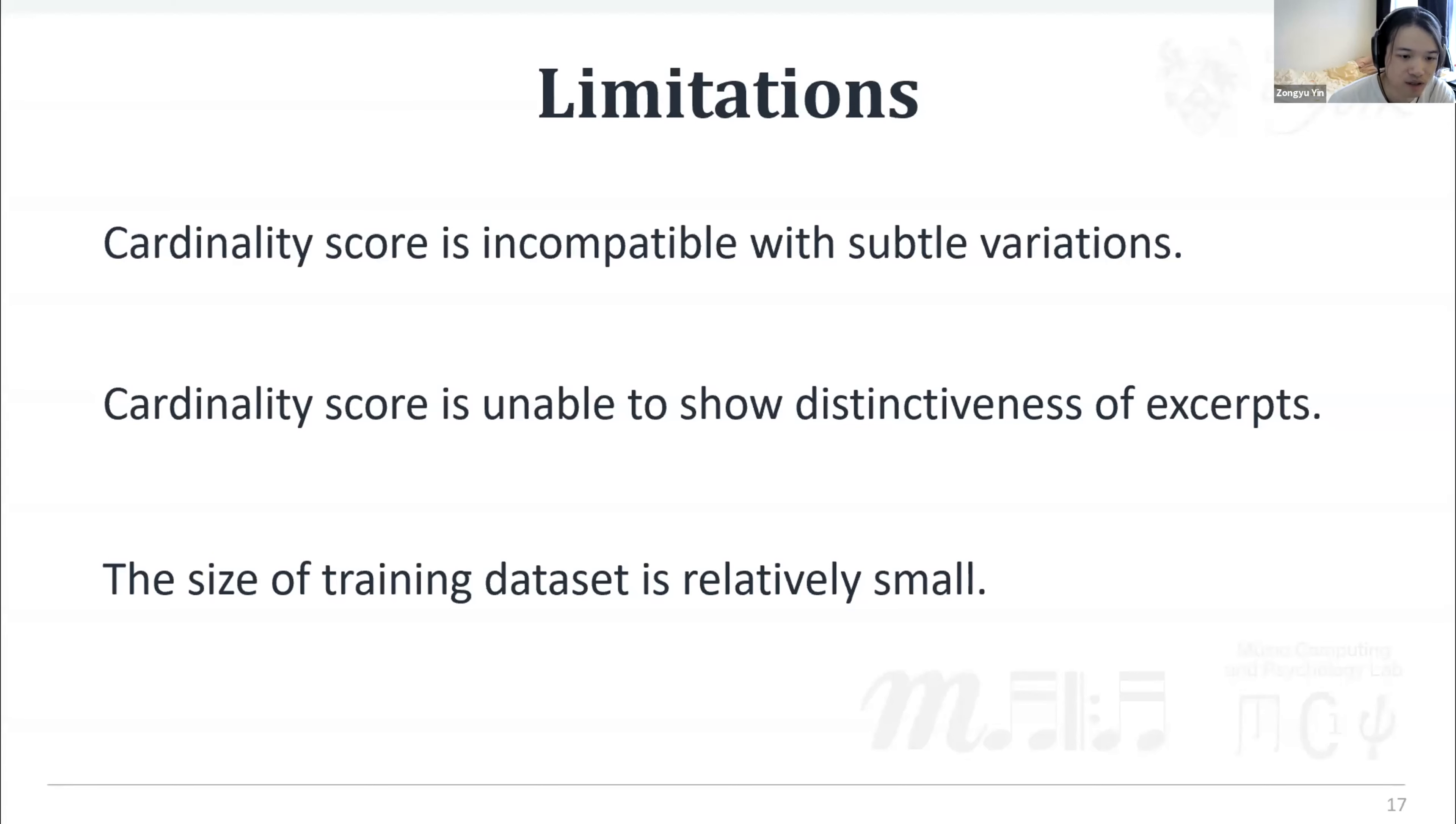The calculation of cardinality score is not robust when dealing with musical data carrying subtle variations such as expressive timing that is included in the maestro dataset. And as aforementioned in the worst case example, cardinality score is unable to show distinctiveness of excerpts, although the cardinality score share common general advantages of geometric approaches compared to a sequential approach. But in its current use, it is not able to take into account the distinctiveness of excerpts being compared.